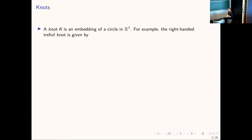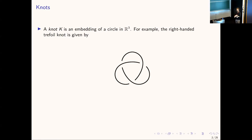Let me give you a running example throughout this talk: the right-handed trefoil knot. These gaps in the diagram are what are called crossings — this knot has three crossings. It's sometimes called the 3-1 knot; in fact it's the only knot with three crossings. In the diagram, this strand is in front, and the break represents the fact that the strand is behind. This is in front, this is behind, and so forth.